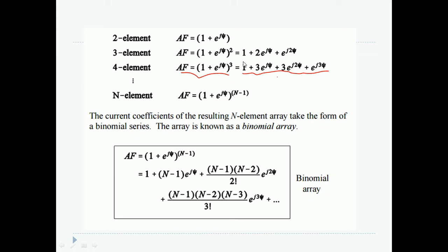The first element should be fed with 1, 3, 3, and 1. Likewise, for an array element for getting side lobe levels to nullify, we should feed the elements with an expression of array factor (1 plus e to the power j psi) to the power n minus 1. The current coefficient of the resulting N-element may take the form of a binomial series. The array is known as binomial array.